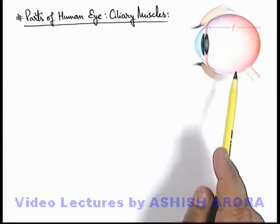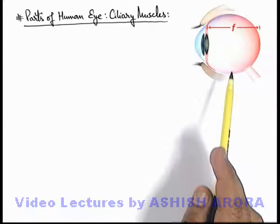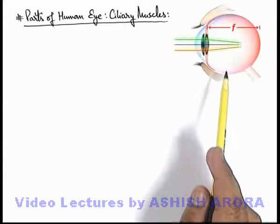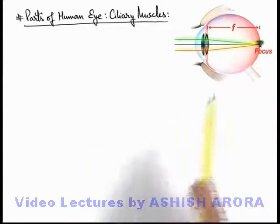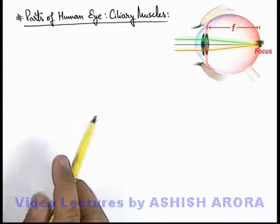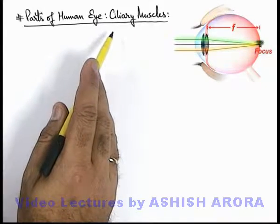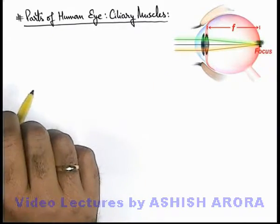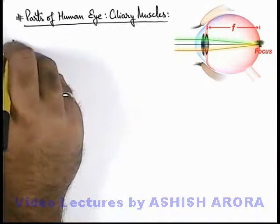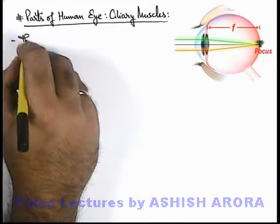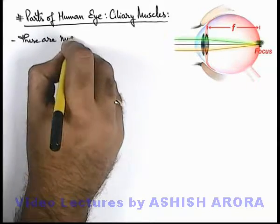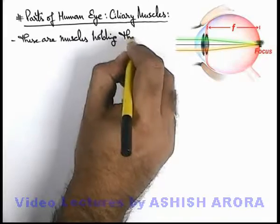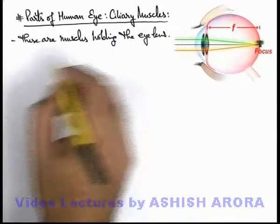Now in the eye lens also there is a focal length, which decides where the image of an object which we are looking at will be produced. We will first study about ciliary muscles and then use this concept of focal length in understanding their working. About ciliary muscles, we can write that these are muscles holding the eye lens at its position — this we already studied in the previous section.